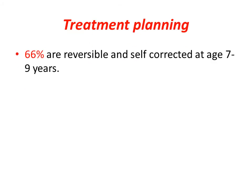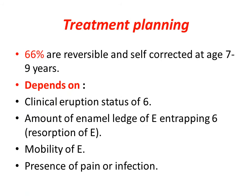For treatment planning: 66% of cases are reversible and self-corrected at age 7 to 9 years. Treatment planning depends on the clinical eruption status of the sixth, the amount of resorption of the E, the mobility of the E, and the presence of pain or infection.